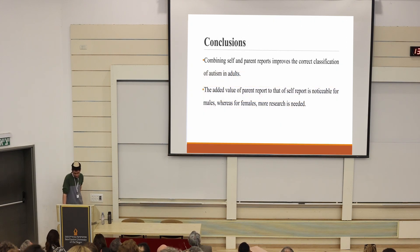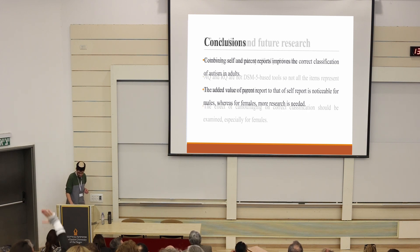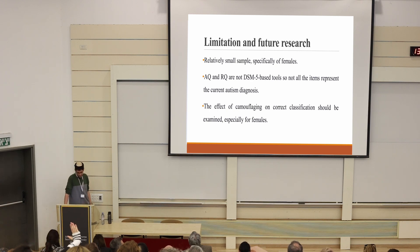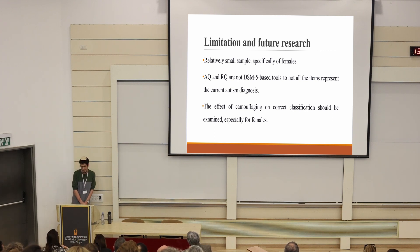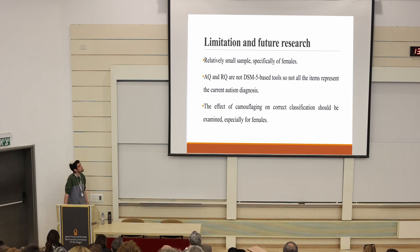For conclusions: combining self and parent reports improves the correct classification of autism in adults, and the added value of parent report to that of self-report is noticeable for males, whereas for females, more research is needed. Limitations include a relatively small sample, specifically for females. The AQ and RQ are not DSM-5 based tools, so not all items represent the current autism diagnosis criteria. Additionally, the effect of camouflaging on AQ classification should be examined, especially for females. Thank you very much.